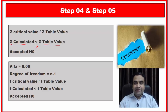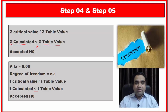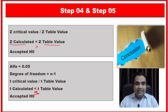Similarly, in the t test, you calculate the t critical value and t table value and compare them with the t calculated value. If the t calculated value is less than the t table value, you accept the null hypothesis. If the t calculated value is greater than the t table value, you reject the null hypothesis.